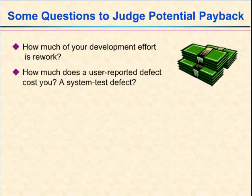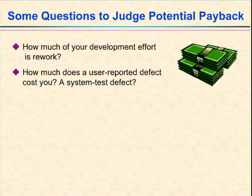Every software organization ought to know, on average, how much it costs to deal with a customer-reported defect, and how much it costs to deal with a defect discovered during system testing. This kind of data lets you know where the leverage is to make your development and maintenance processes more efficient. You might discover that shifting a fraction of your planned testing resources into early inspection of requirements documents pays off in a big way. Of the defects that users report or are discovered during system testing, how many can you trace back to requirements problems? This shows you where you have a high leverage opportunity to reduce costs by detecting problems early.